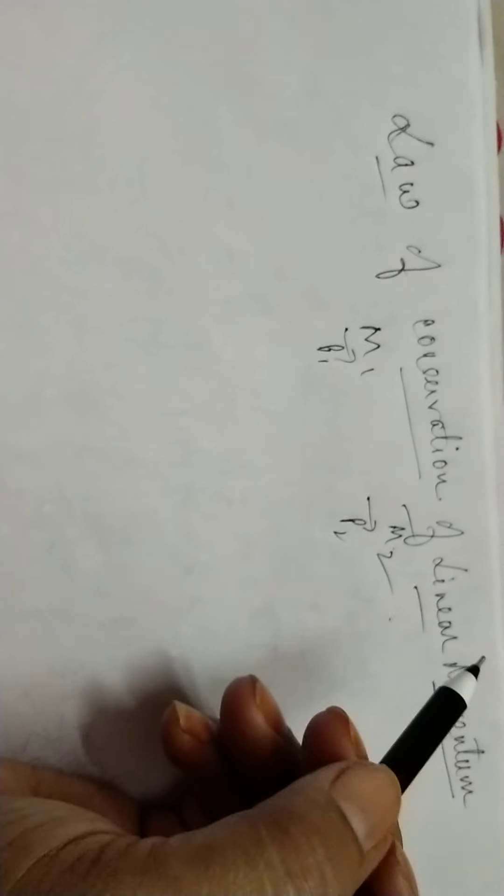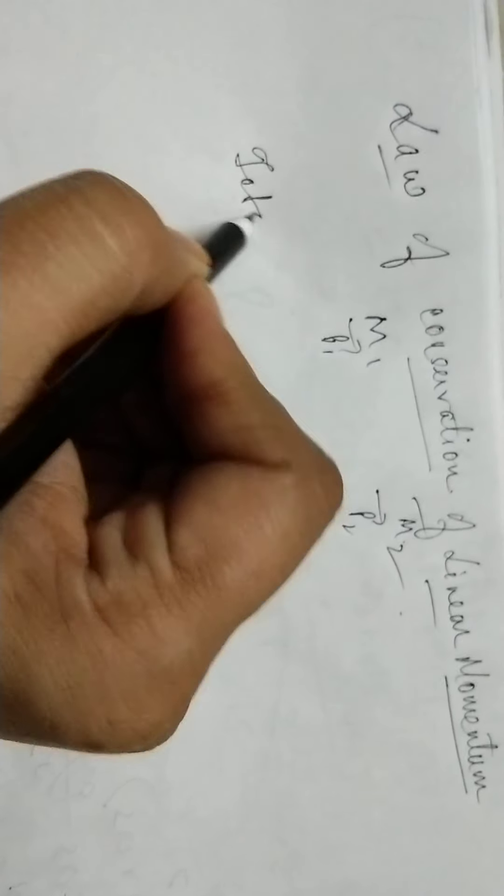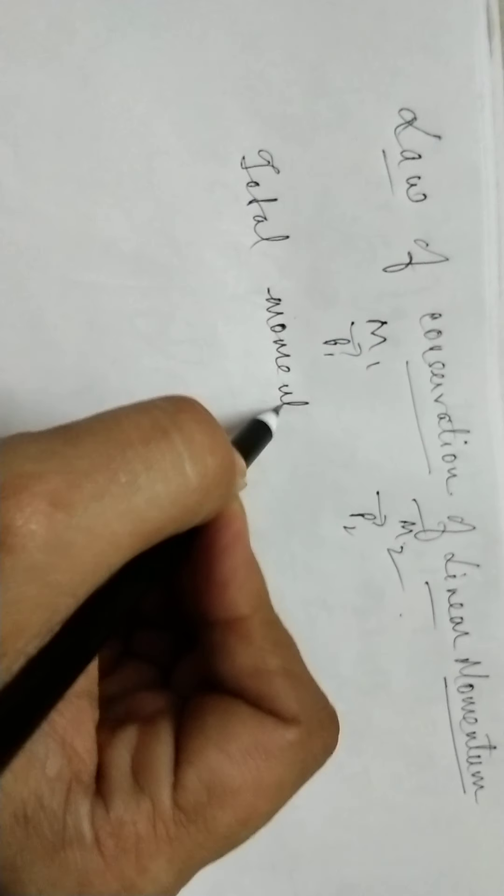In order to prove this, we will consider two particles of masses m1 and m2. The individual momenta are p1 vector and p2 vector. As a result, the total momentum of the system, p vector, is equal to p1 vector plus p2 vector.